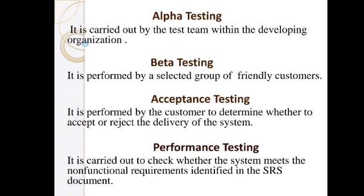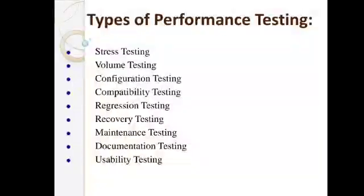Beta testing is performed by a selected group of friendly customers. Acceptance testing is performed by customers to determine whether to accept or reject the delivery of the system. Performance testing is carried out to check whether the system meets the non-functional requirements identified in the SRS documents.